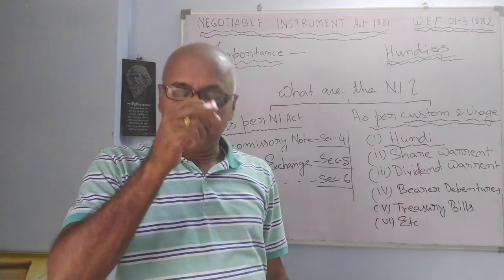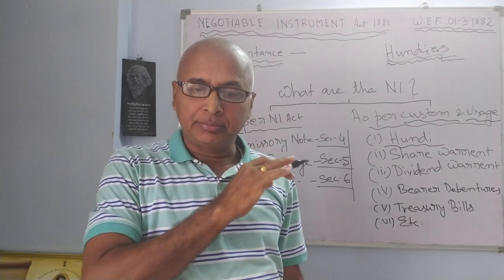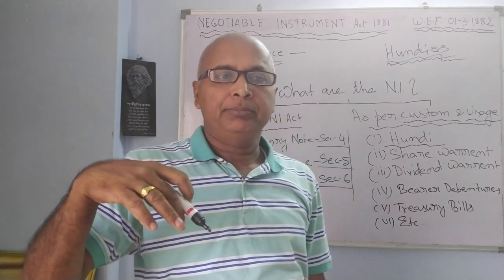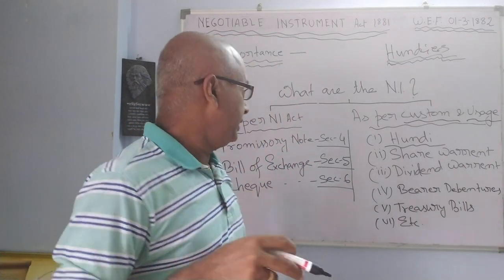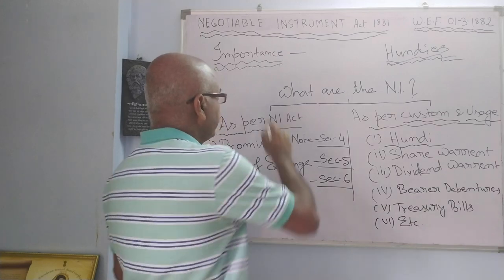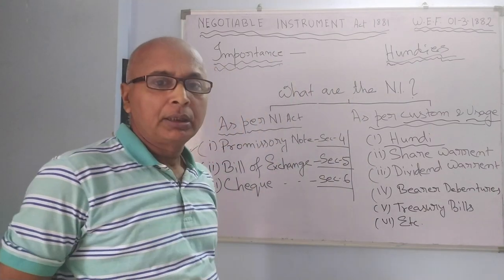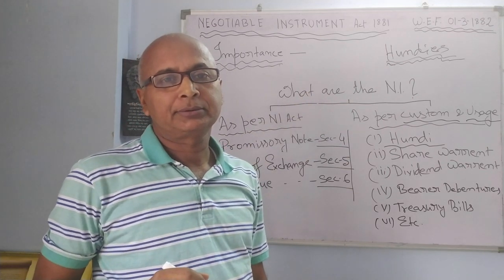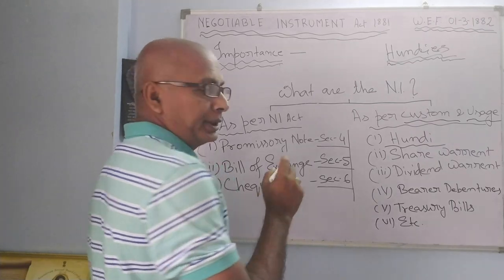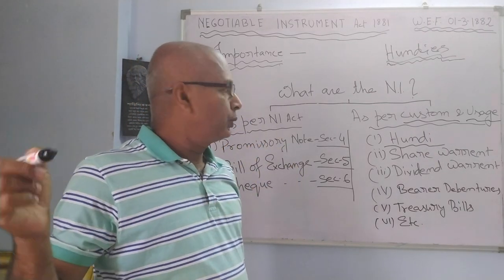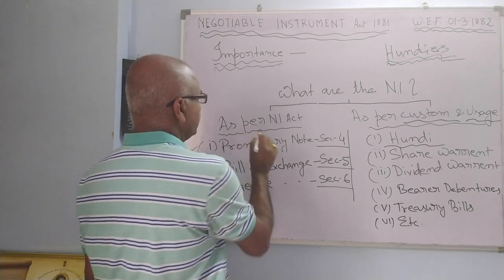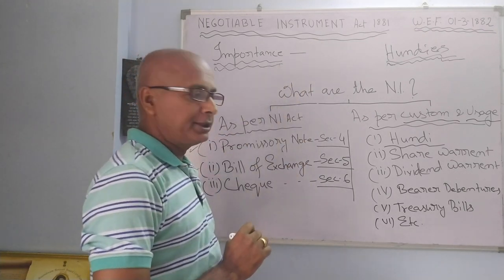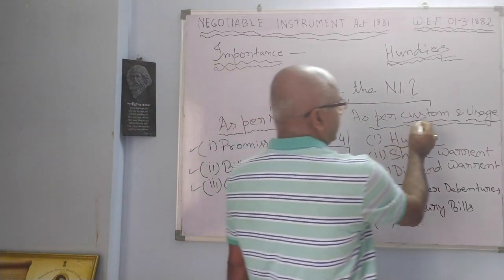To solve this problem — the lack of written rules created many problems — the then Government of India introduced this act. Now, let us come to what are the negotiable instruments. We can categorize them into two groups: negotiable instruments as per the act (Negotiable Instruments Act 1881), and as per custom and use.